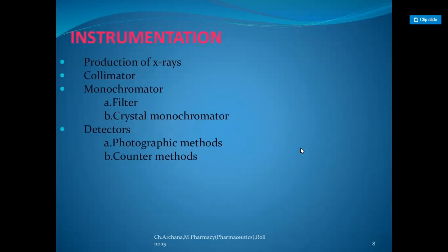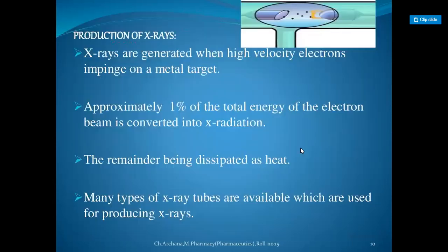In instrumentation, the system contains an X-ray source, collimator, monochromator, and detectors. X-rays are generated when high velocity electrons impinge on a metal target. Approximately one percent of the total energy of the electron beam is converted into X-radiation, with the remainder being dissipated as heat. Many types of X-ray tubes are available for producing X-rays.